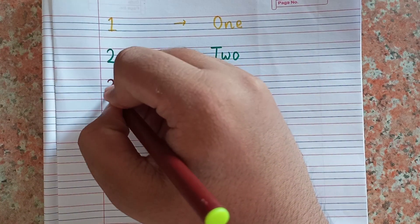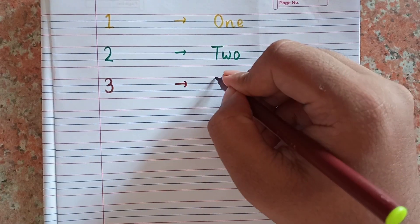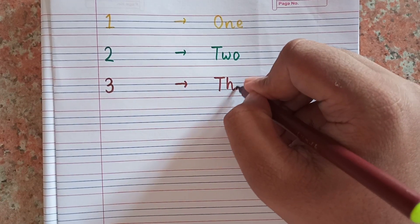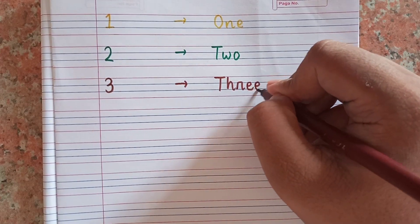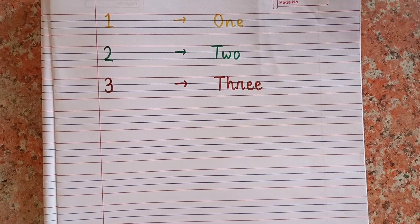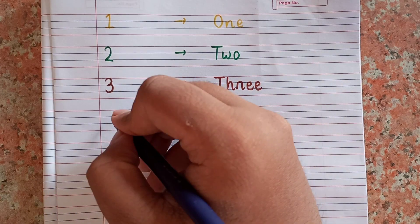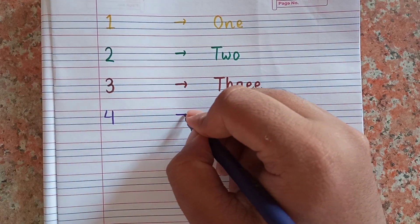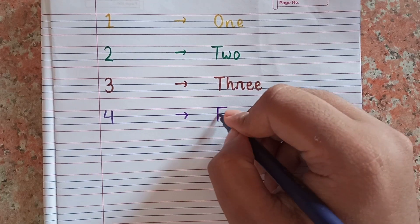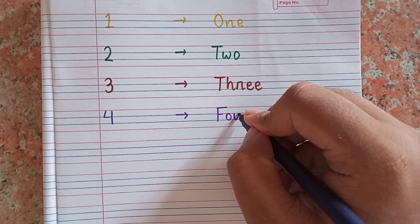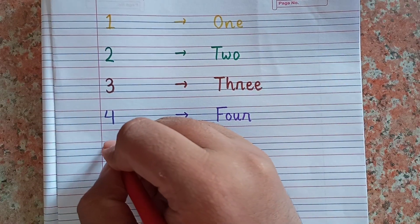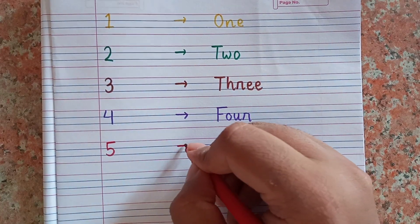After 2, next number will be 3. Now I will write number 3. This is number 3 and spelling of 3 is T-H-R-E-E. 3, T-H-R-E-E. After 3, next number will be 4. This is 4 and spelling of 4 is F-O-U-R. 4, F-O-U-R.